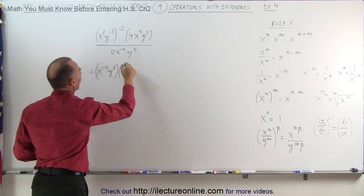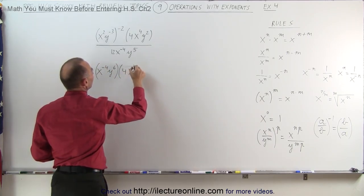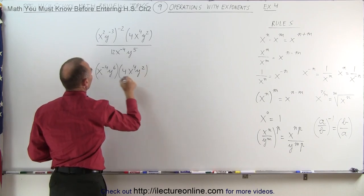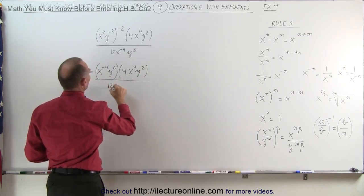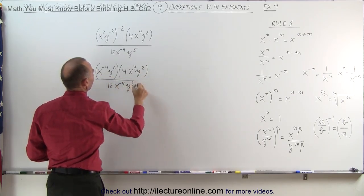This is then multiplied times 4x⁴y² and finally divided by 12x⁻⁴y⁵.